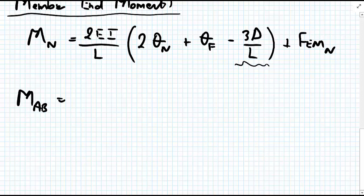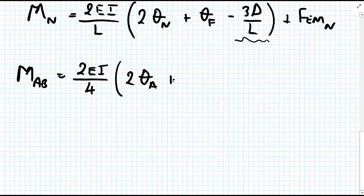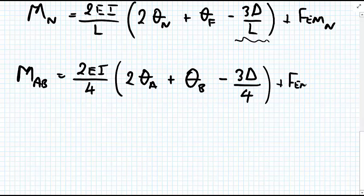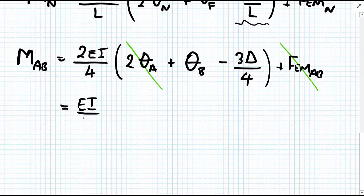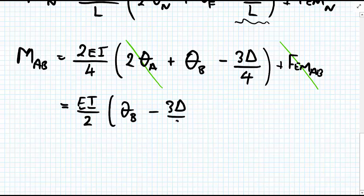So for M_AB: M_AB equals 2EI over the length of AB which is 4, multiplied by 2 times theta_A plus theta_B minus 3 delta upon 4, plus the fixed end moment which is zero. Since theta_A equals zero (no rotation at A), we tidy this up to get M_AB equals EI upon 2 times (theta_B minus 3 delta upon 4).